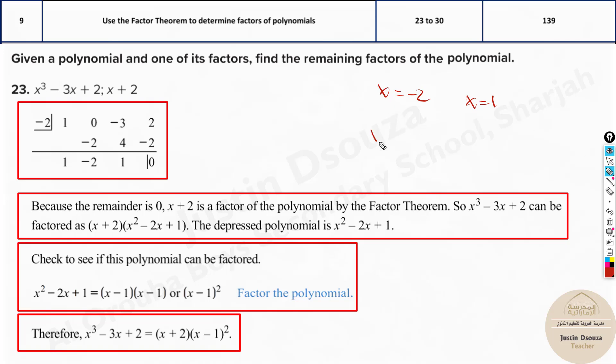So one factor is x + 2, another factor is x - 1. Now here, they have told this is one factor already. Did they mention any power 2? No. So the other factor, whatever you get, is of multiplicity 2. That means this is repeated twice.